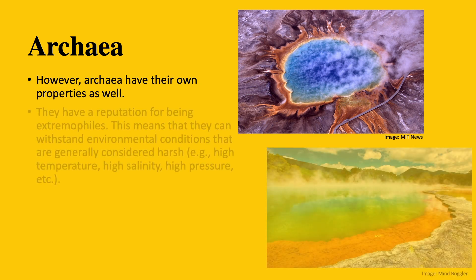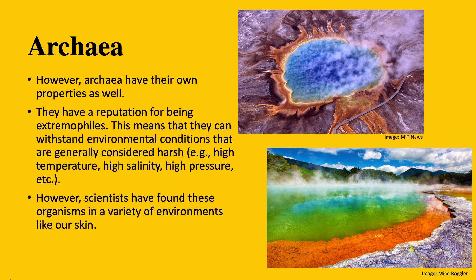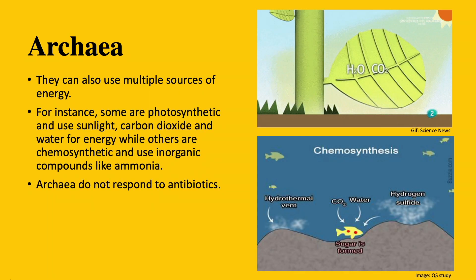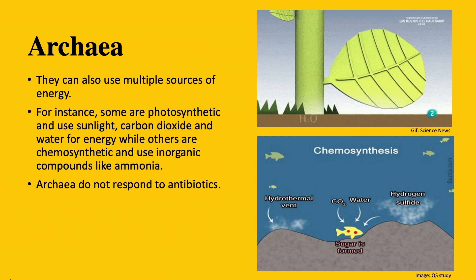Although they are similar to eukaryotes and bacteria, they are also unique in their own ways. For instance, they have a reputation for being extremophiles. This means that they can withstand extreme environmental conditions that are generally considered harsh — for example, high-temperature environments, high-pressure environments, and environments with high salinity. However, scientists recently have also found these organisms in a variety of normal environments like our skin. Another notable characteristic of archaea is that they can use multiple sources of energy. Some are photosynthetic and use light, carbon dioxide, and water for energy production. Others are chemosynthetic and use inorganic compounds like ammonia for energy production.